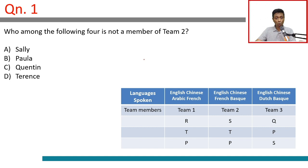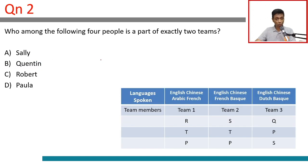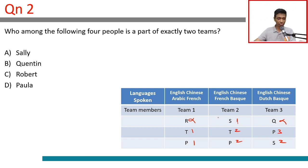Now let's go to the questions. Who among the following is not a member of team 2? Team 2 has Sally, Paula, and Terence. Quentin is not part of team 2 — Quentin can only be in team 3. Who among the following is a part of exactly 2 teams? Robert is in only 1 team, Quentin is in only 1 team, Terence is in 2 teams, Sally is in 2 teams, and Paula is in all 3 teams. The answer is Sally.